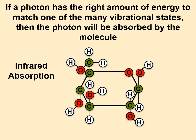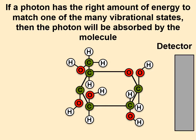It absorbs infrared light because the energy needed to vibrate is in the infrared region. What's really cool is we can add a detector on the far side of the molecule, and send in photons of a distribution of known colors. The ones that match a vibrational state will get absorbed, and the ones that don't will go through and reach the detector.